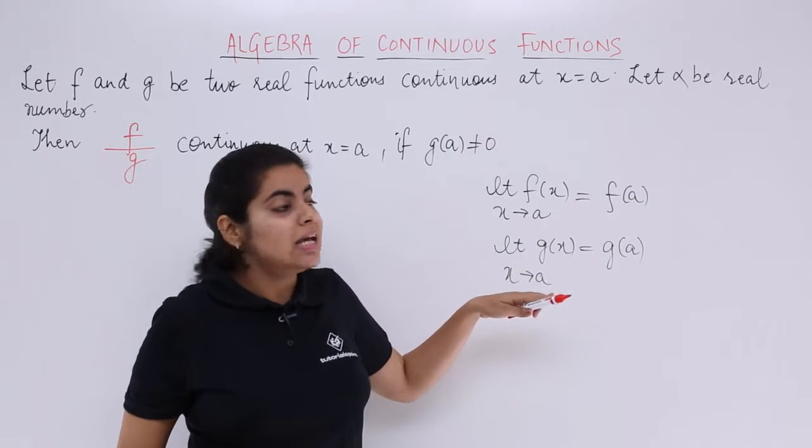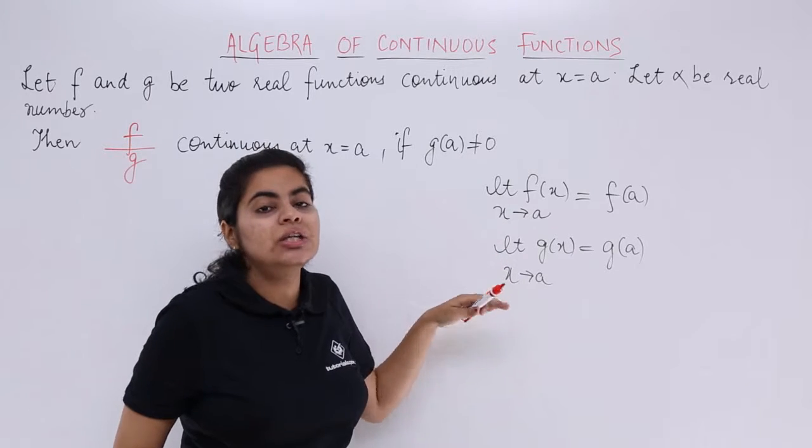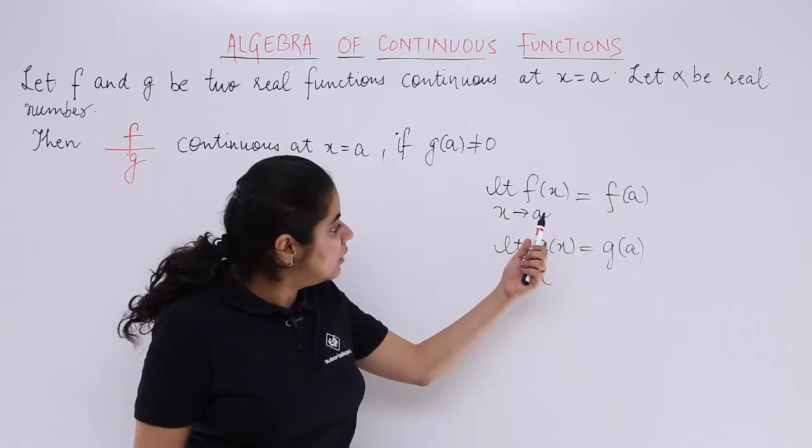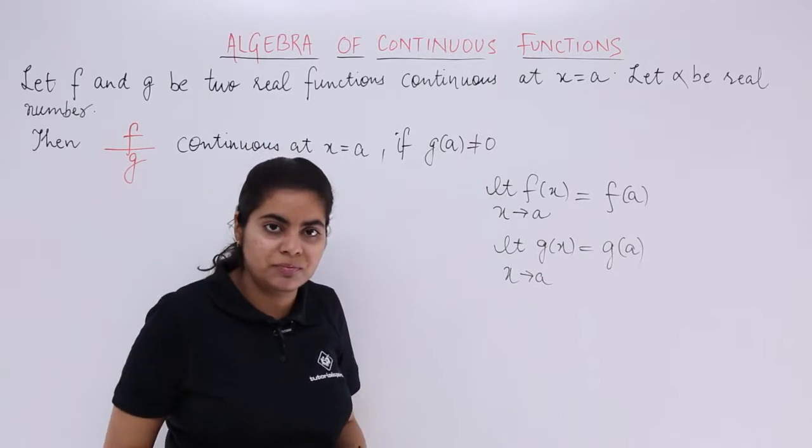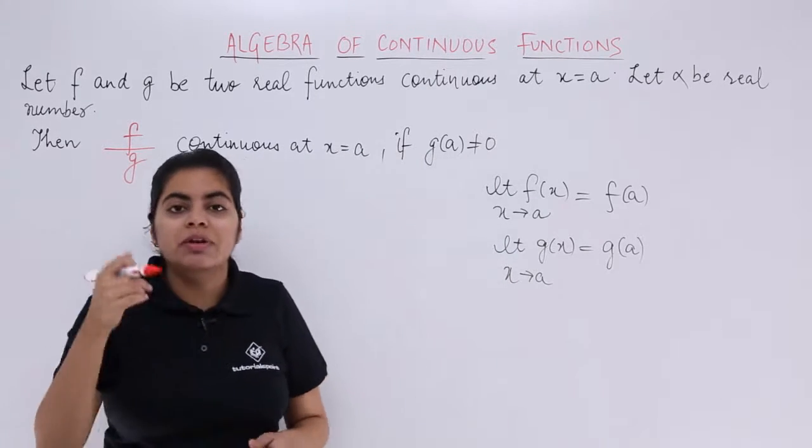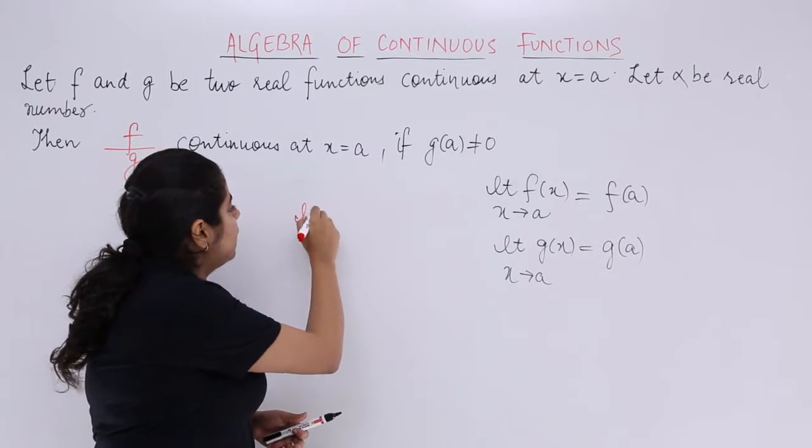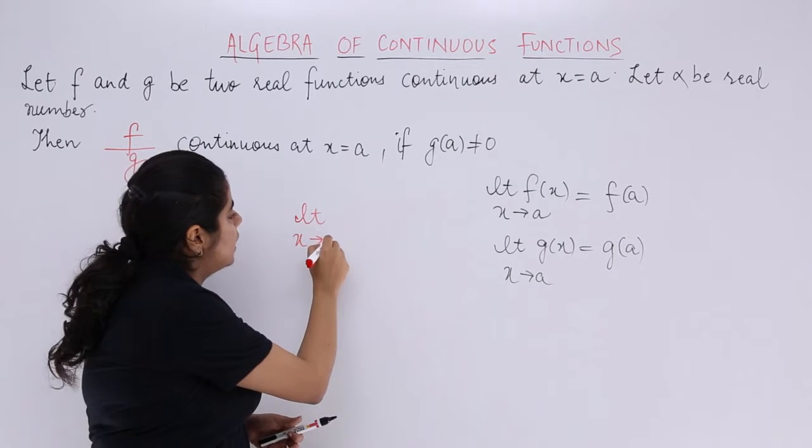The reason being simple: these functions are continuous, so the limit should be equal to the value of the function. Now we have to talk about f upon g. When you talk about f upon g, you know that you are going to speak something about this.